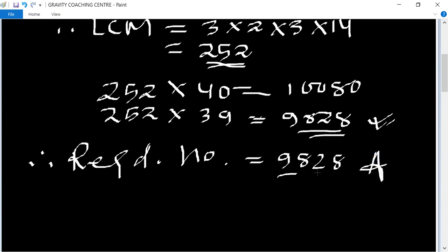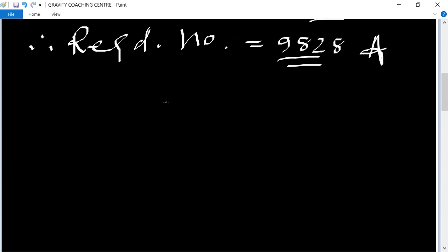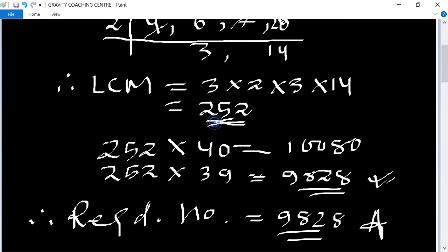We can find this number by another method. The largest four-digit number, 9999, divided by the LCM 252.